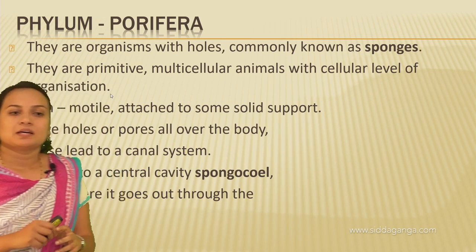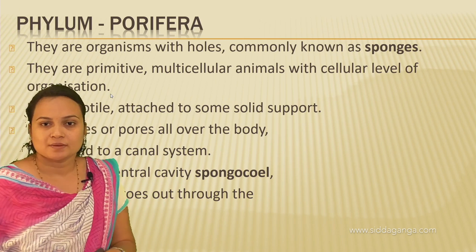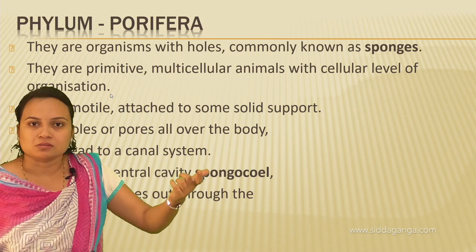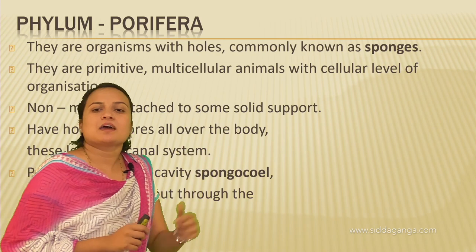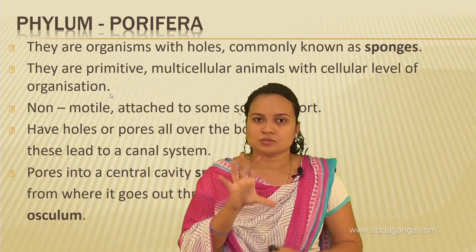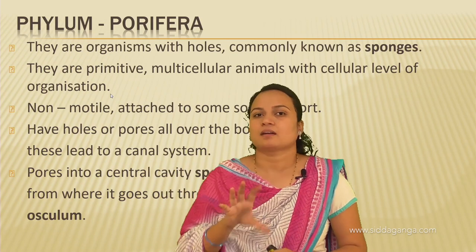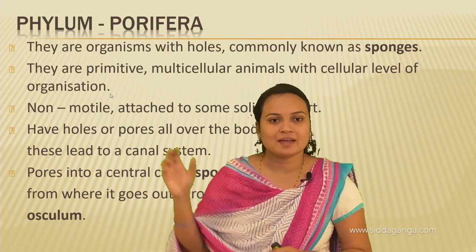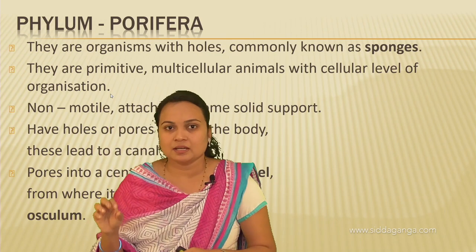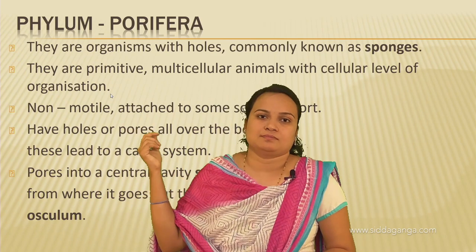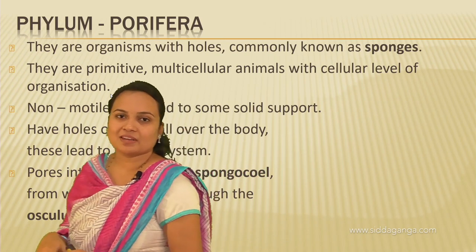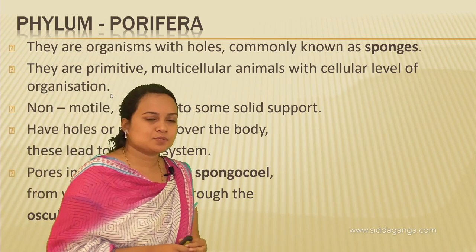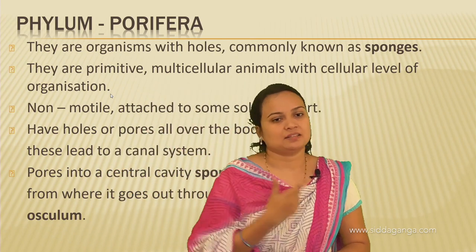Porifera are very primitive, lower organisms in the animal kingdom. They are multicellular animals with cellular level of organization — meaning cells are loosely arranged, not compactly. They are non-motile, attached to some solid support. Usually they are aquatic, mostly marine, though some are freshwater. They are found in underwater environments, attached to rocks or other solid materials for support.